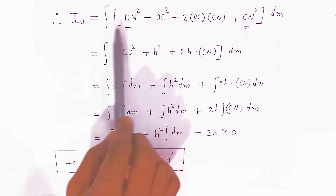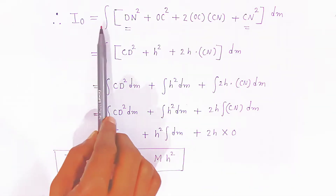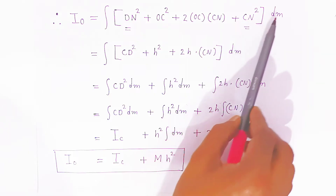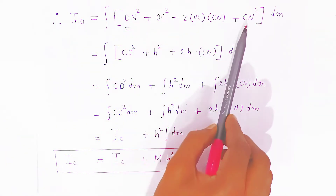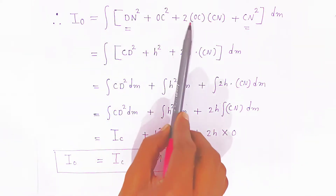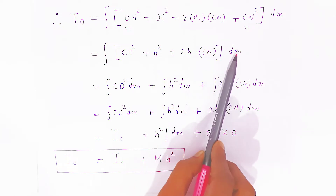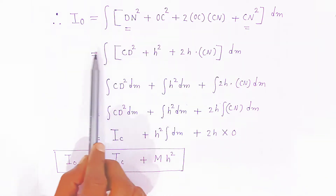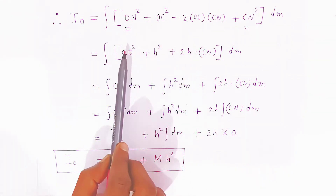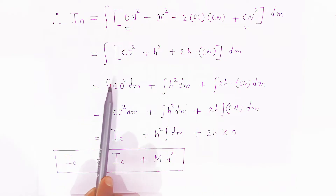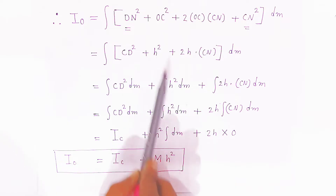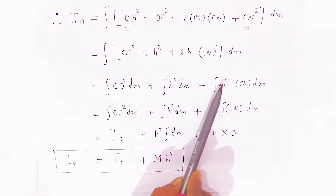Now we are not integrating yet, we are expanding the terms. IO equals integration of DN squared plus OC squared plus 2 times OC times CN plus CN squared, all times DM. Now CN squared plus DN squared is nothing but CD squared, and OC is H. So we have CD squared plus H squared plus 2H times CN, into DM. Now introducing integration inside the bracket, there are three terms.